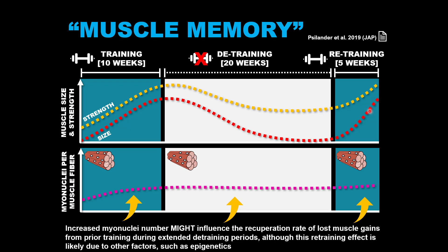This is all in theory, but there is evidence that suggests this may in part have to do with myonuclei. During the initial training period there was an increase in myonucleogenesis and myonuclei accretion. During the detraining period, the myonuclei number may have remained elevated, and thus during the retraining period there was an elevated capacity for muscle hypertrophy that was not present before the initial training period. While this study showed very little contribution of myonuclei to the retraining effect, others have shown myonuclei to play a role.